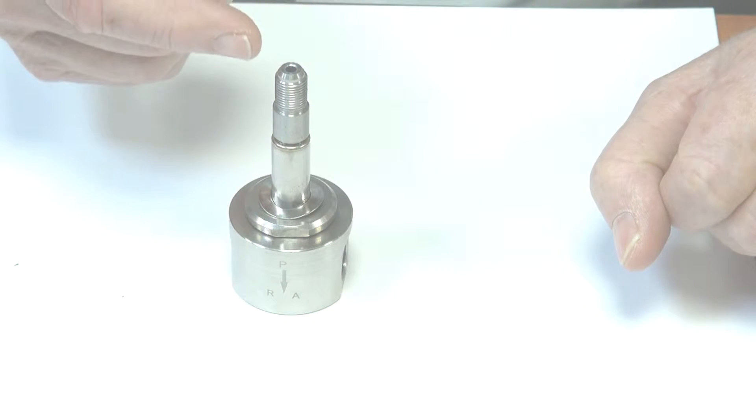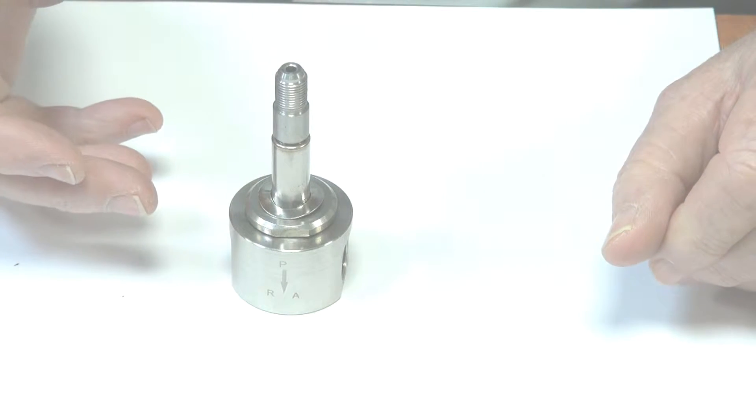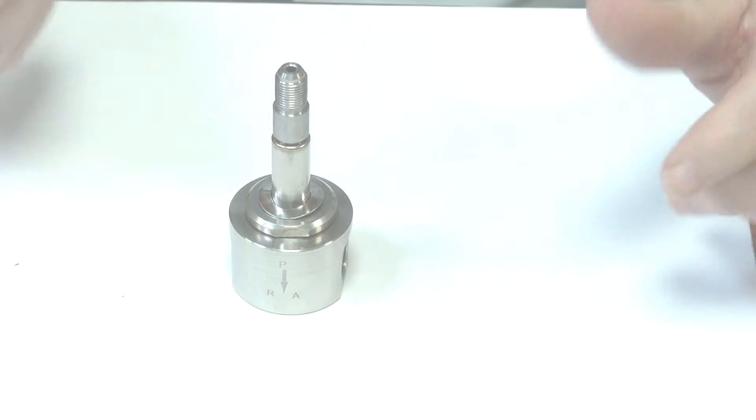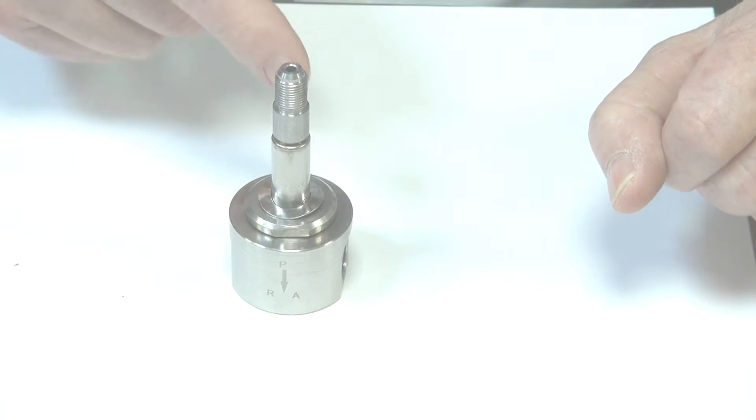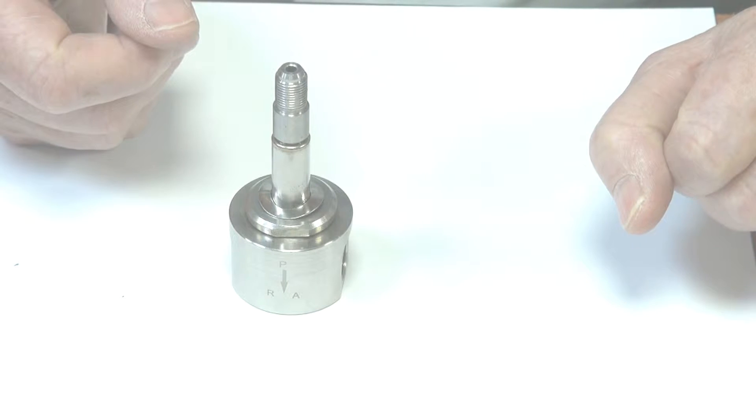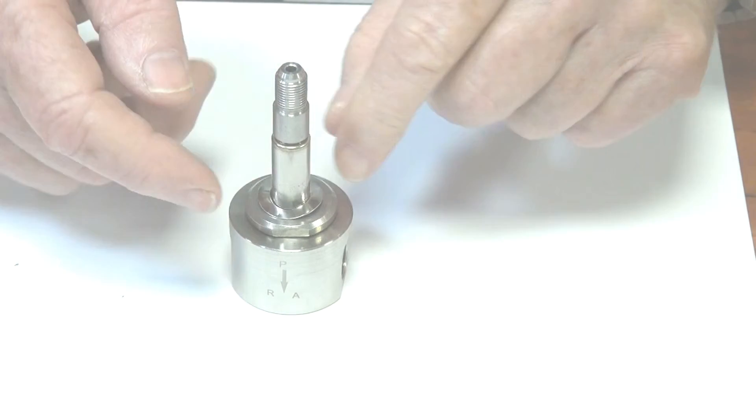It's a normally open function. We take the power off and we get the product or media being passed through the valve, so down through here and out this port here, port A.